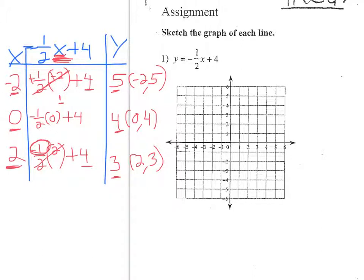So we graph these three points. We've got negative 2, 5 — I go to the left 2 and up 5, so we're right there. Then we have (0, 4) — this is just a y-intercept, we go up 4 units and plot that point. Then we have (2, 3) — from the origin we go to the right 2 and up 3, and there it is. It matches up. So there's our line. Even though we have fractions in the equation, we deal with it in a way so that we just get back whole numbers.